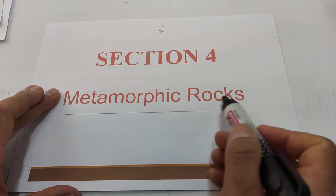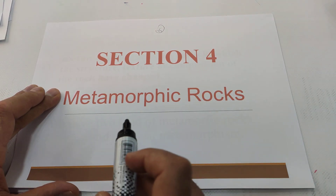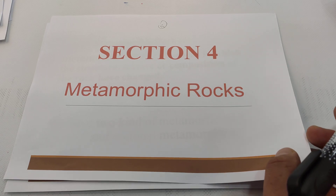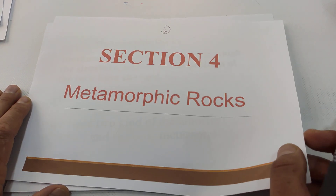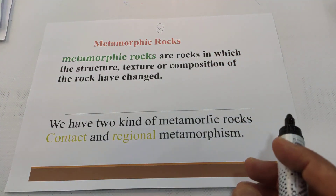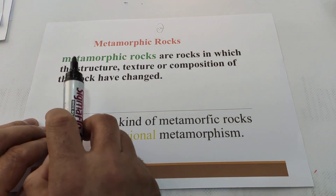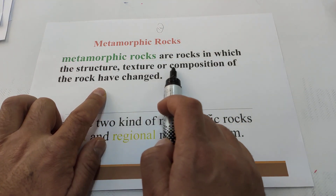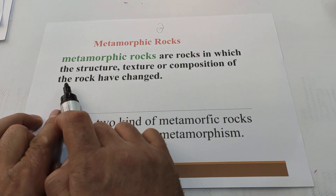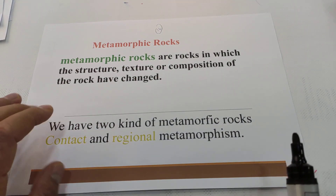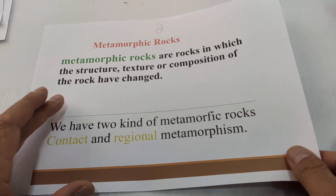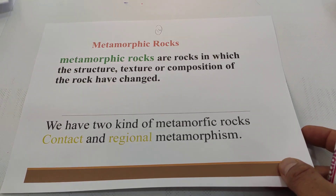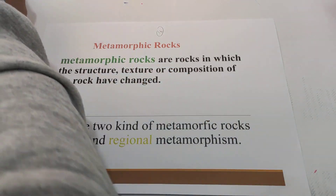Section four: metamorphic rocks. When layers of sedimentary rocks come together under heat and pressure, they become metamorphic rocks. Metamorphic rocks are rocks in which the structure, texture, or composition of the rock has changed — changed from sedimentary rocks.